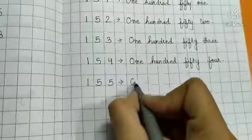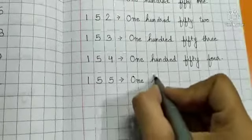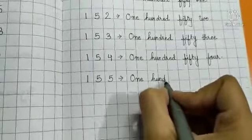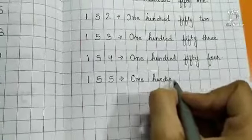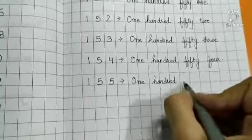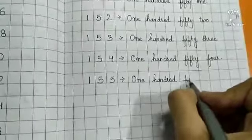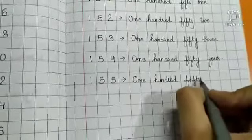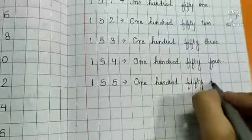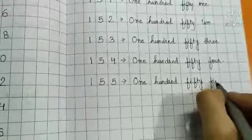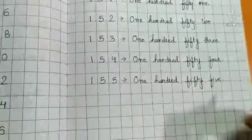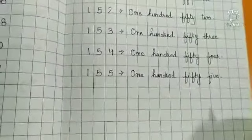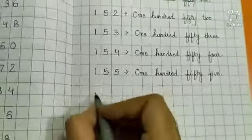155. O-N-E 1, H-U-N D-R-E-D 100, F-I-F-T-Y 50, F-I-V-E 5. 155.